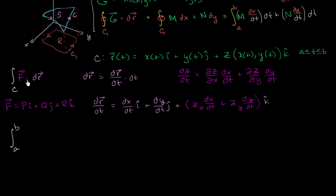So we're going to get P times dx/dt plus Q times dy/dt plus R times all of this business—the partial of z with respect to x times dx/dt plus the partial of z with respect to y times dy/dt. Then we multiply all of this times dt. We can't forget that part.